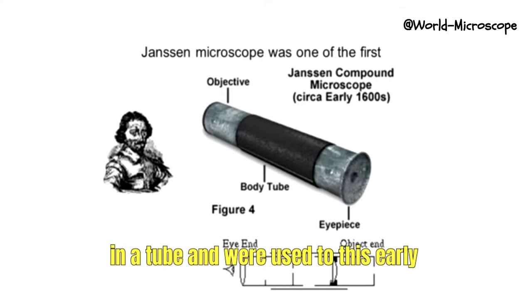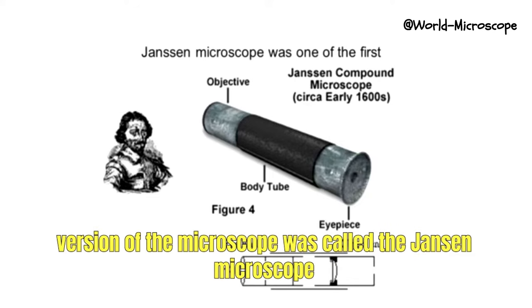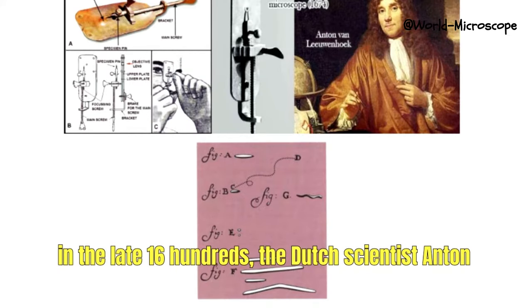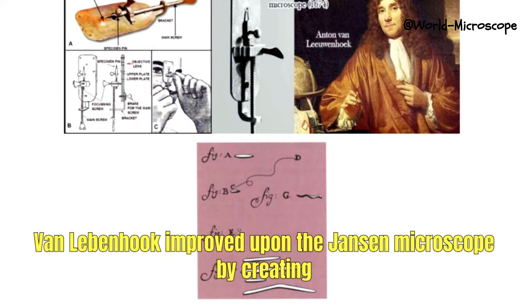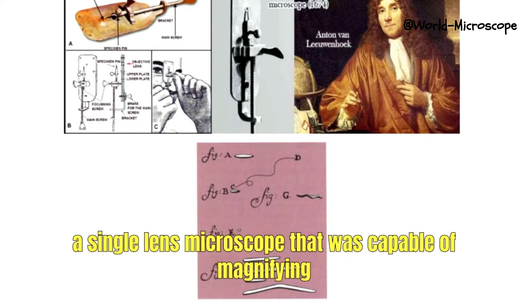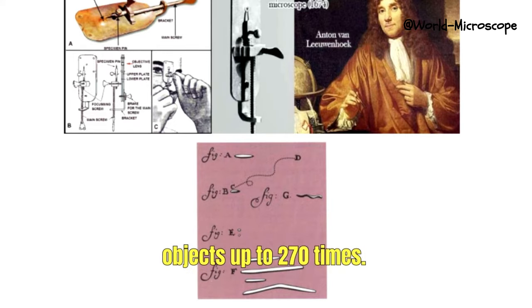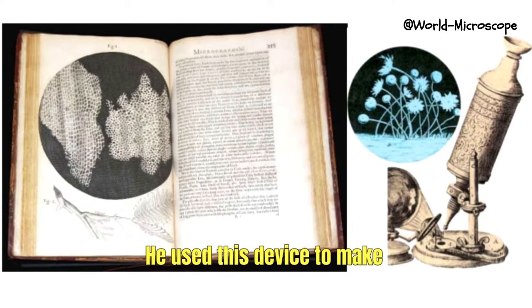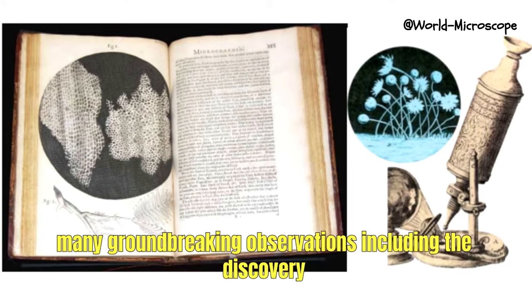This early version of the microscope was called the Jansen microscope. In the late 1600s, the Dutch scientist Anton van Leeuwenhoek improved upon the Jansen microscope by creating a single lens microscope that was capable of magnifying objects up to 270 times. This was the first true microscope.